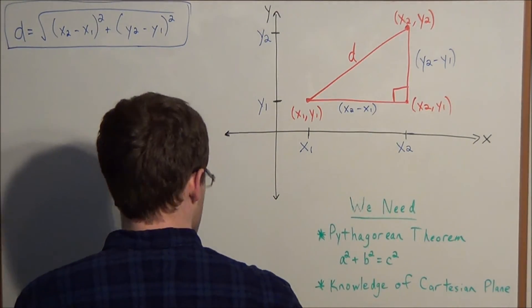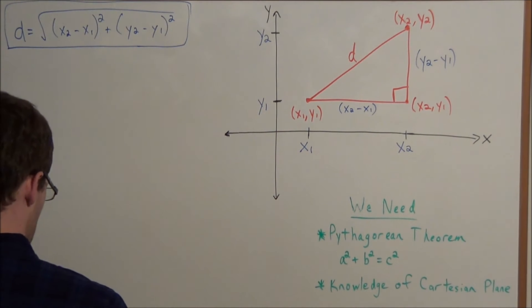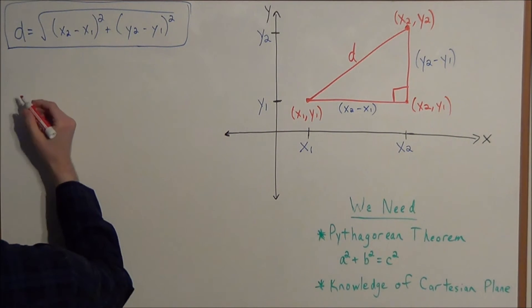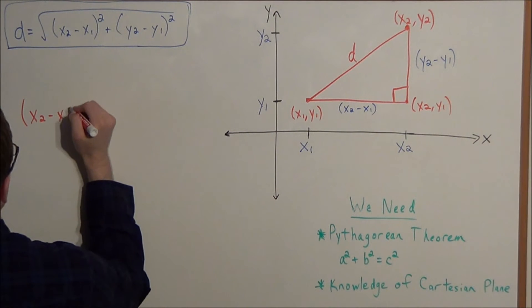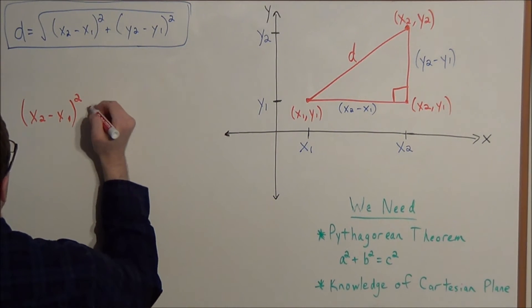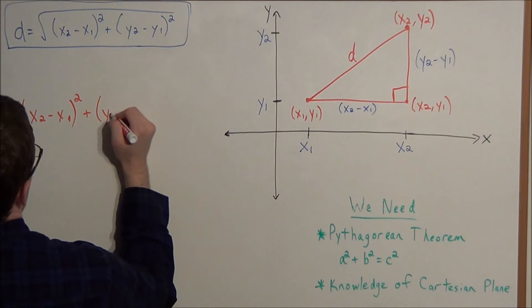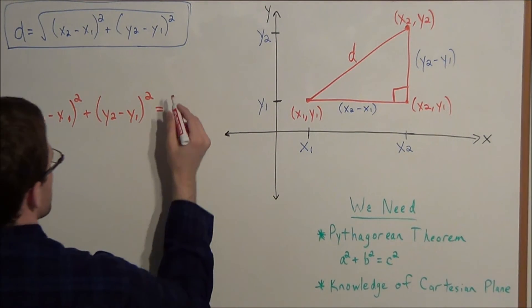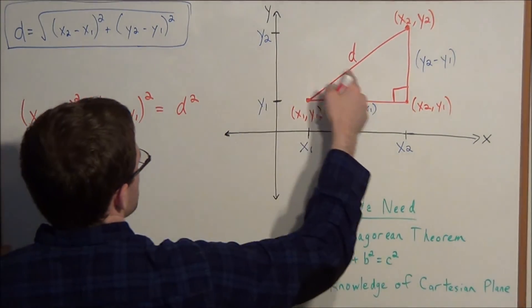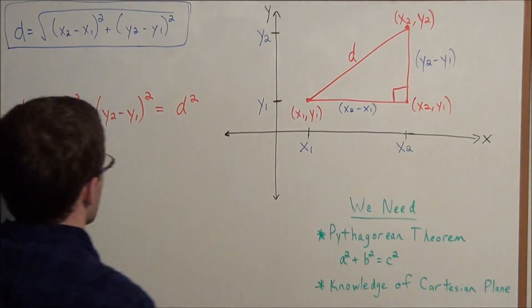So if we apply the Pythagorean Theorem to this right triangle, we could set up the equation (x2 minus x1) squared plus (y2 minus y1) squared is equal to d squared. And notice how d is in fact the hypotenuse of this right triangle.